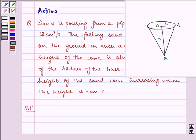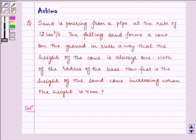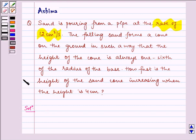It is given to us that sand is pouring from the pipe at the rate of 12 cm³ per second, i.e., dV/dt is equal to 12.